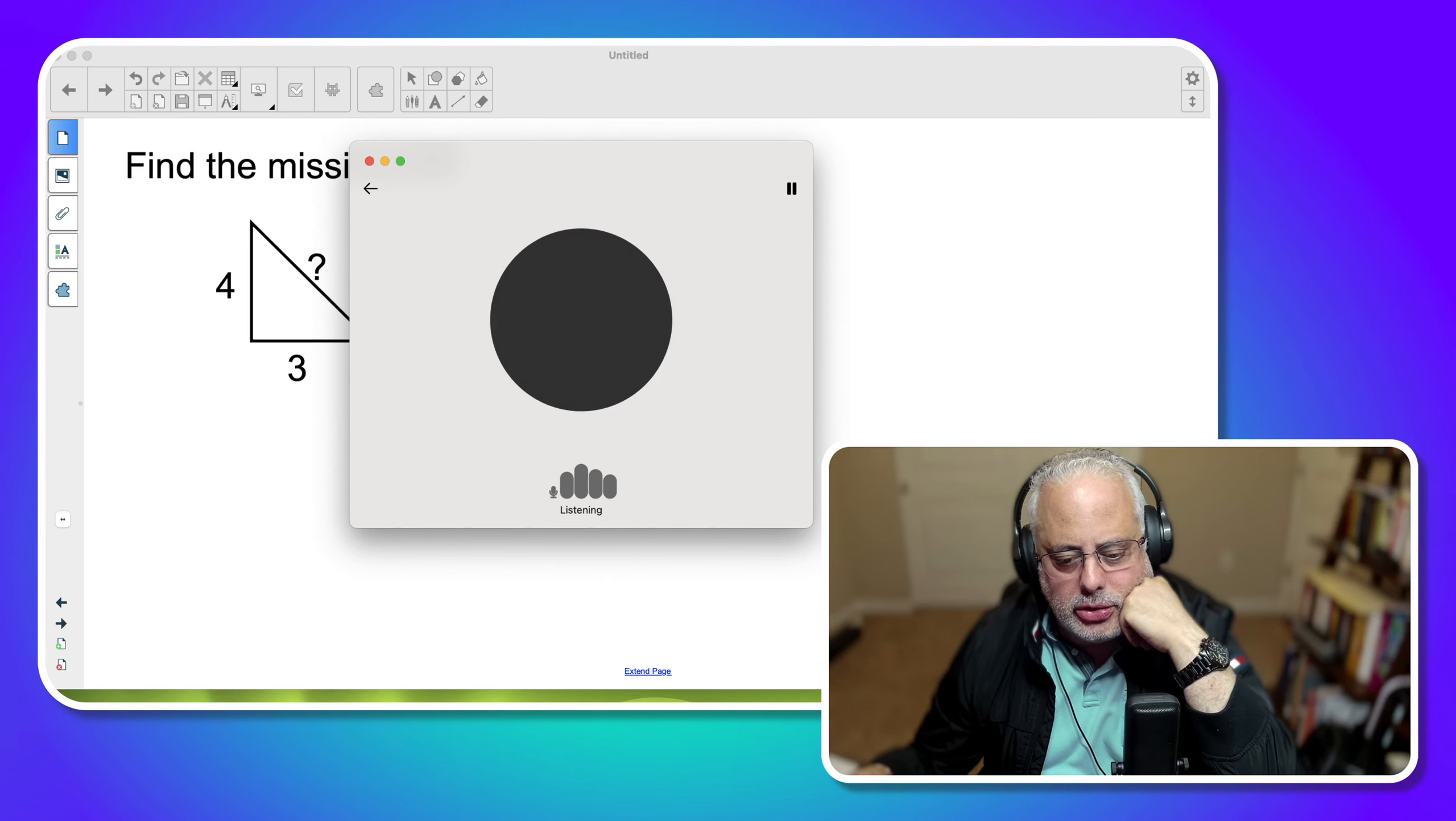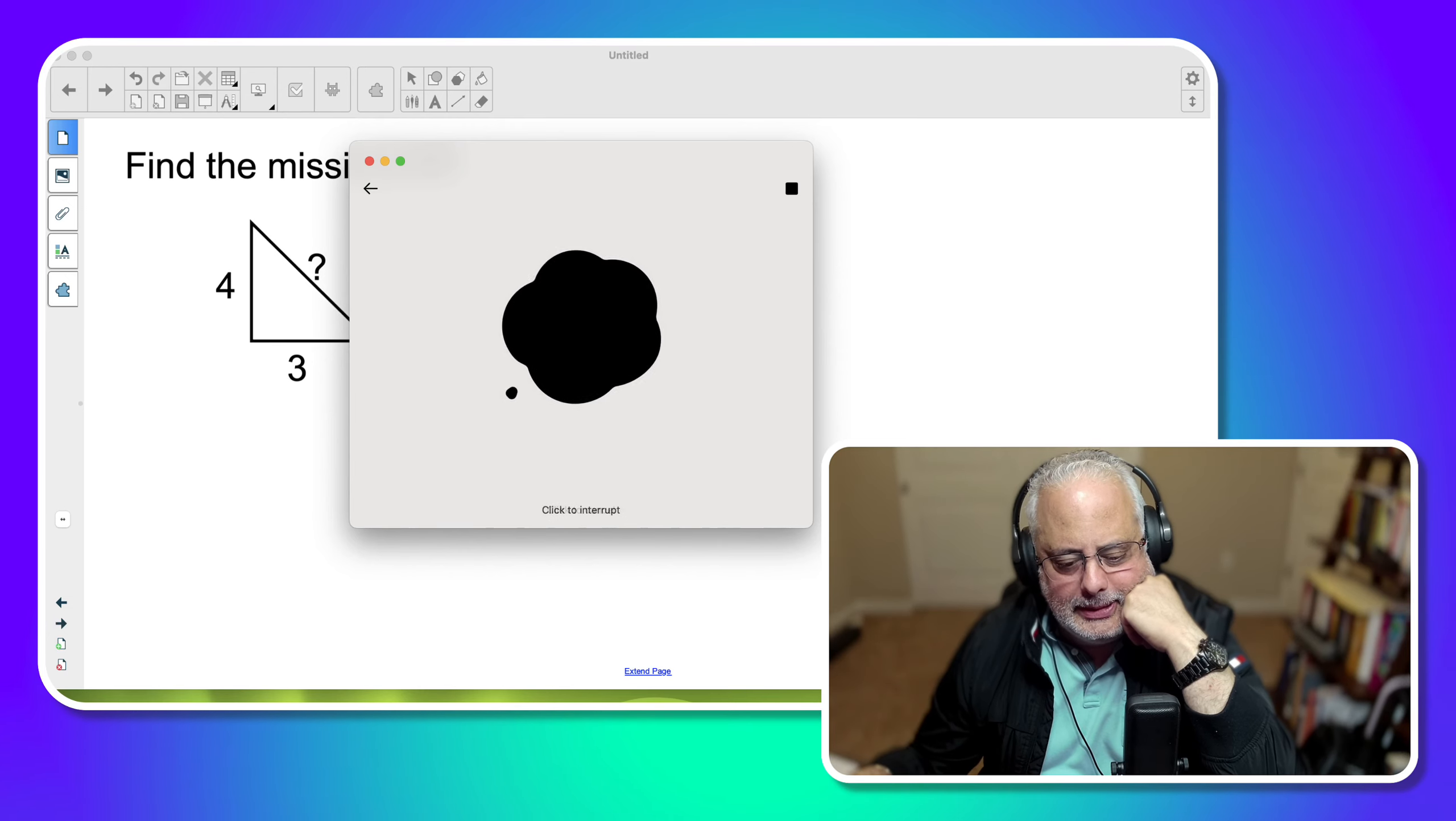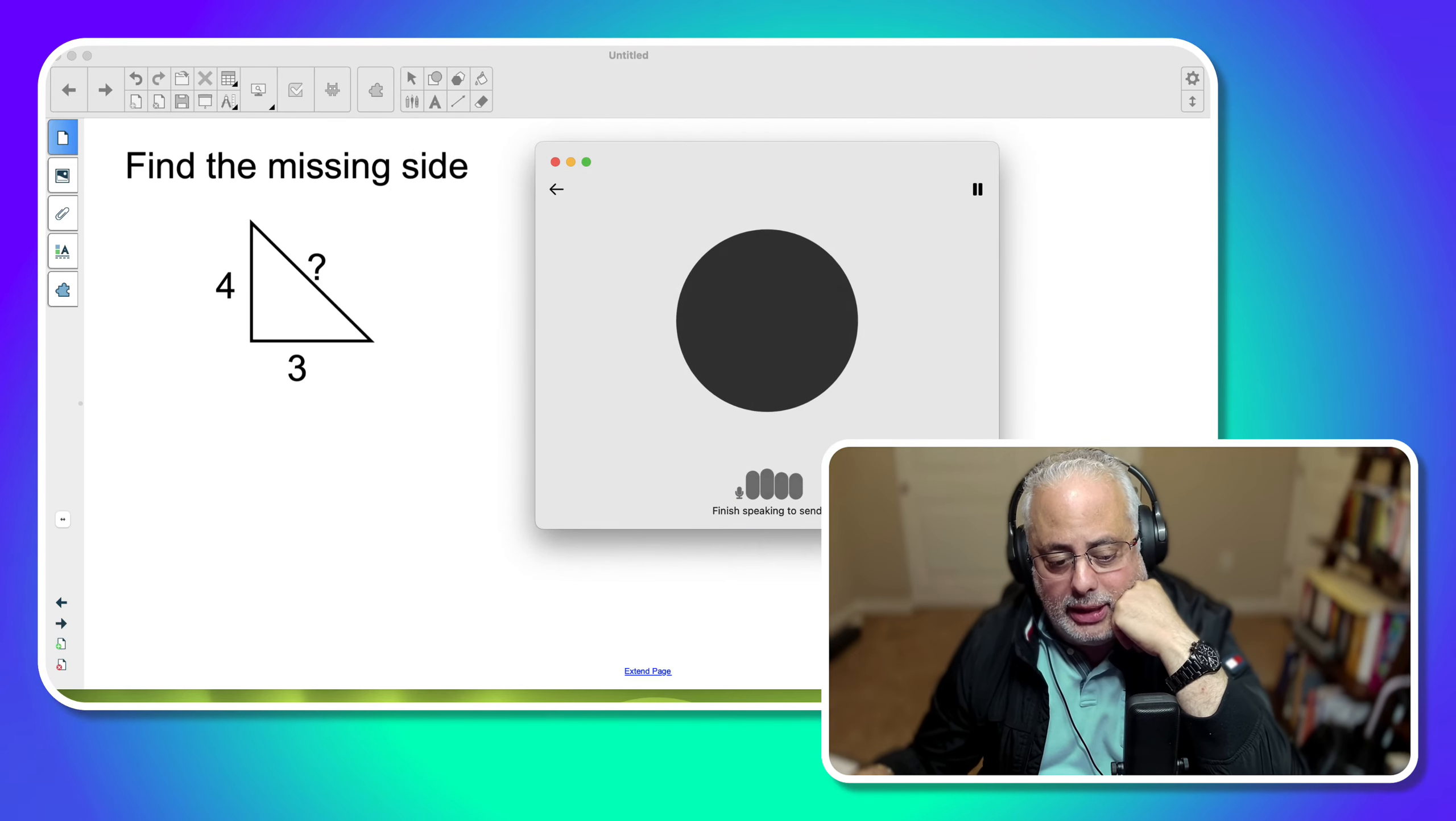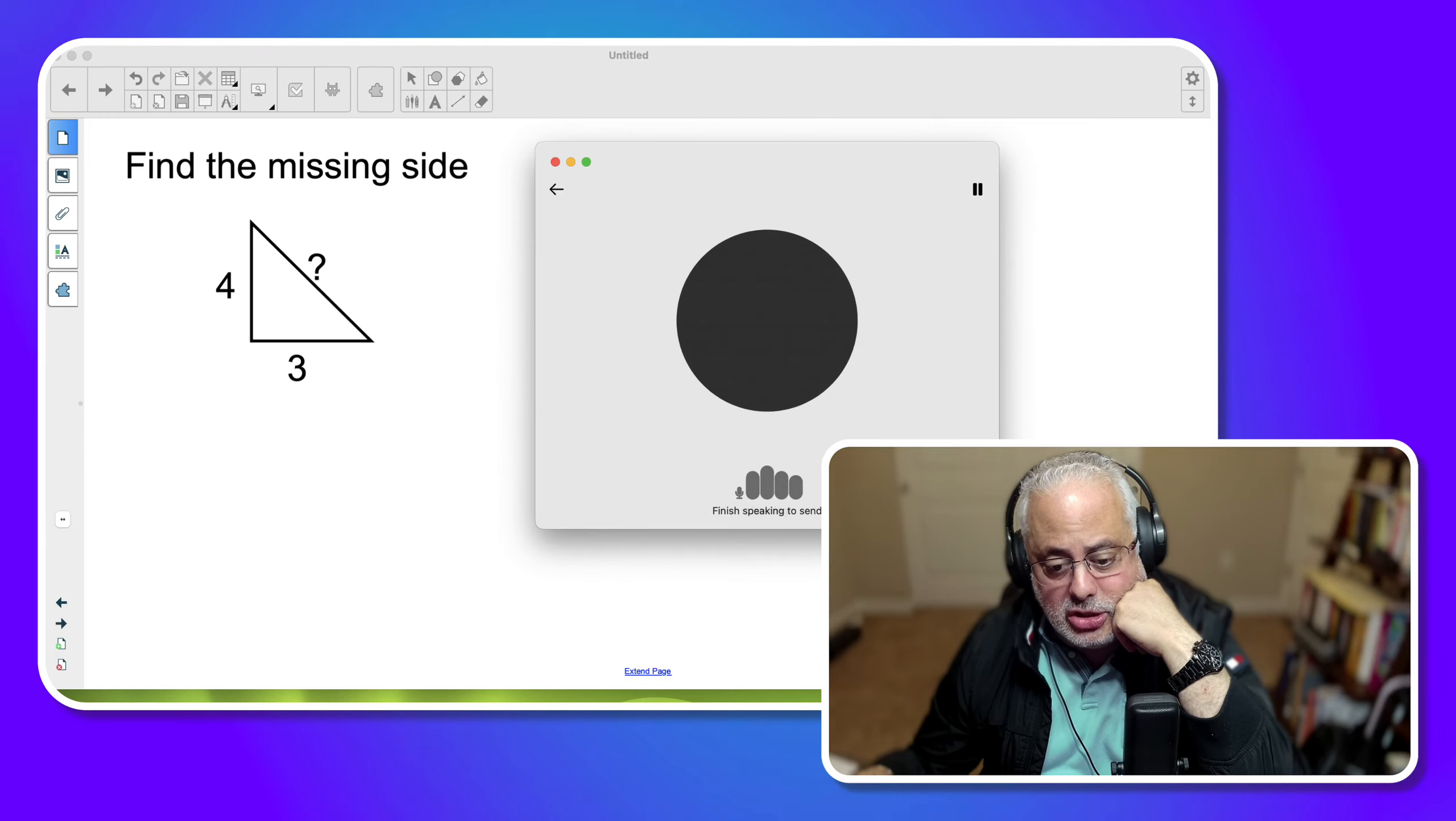I have a math question. Sure. Go ahead with your question. Okay. The question is a right triangle. Basically, the right triangle provides the sides, legs, four and three. Can you help me how to find the missing side?